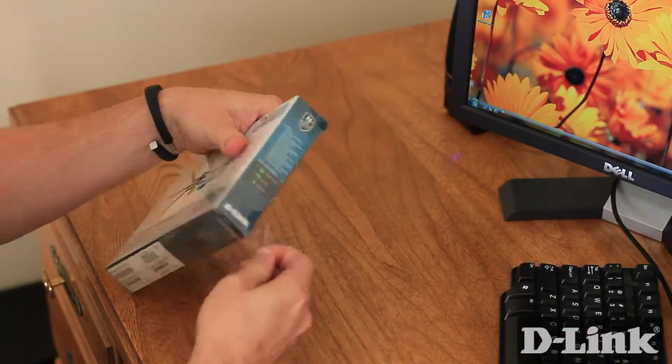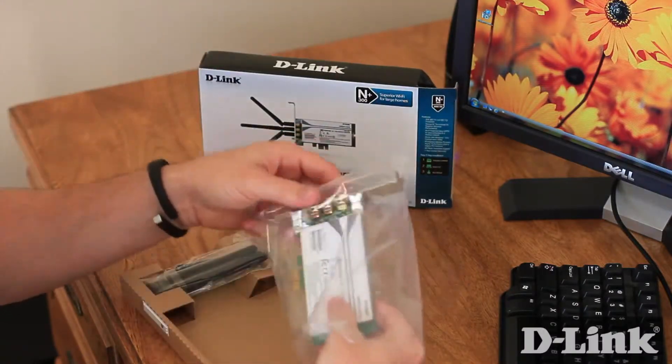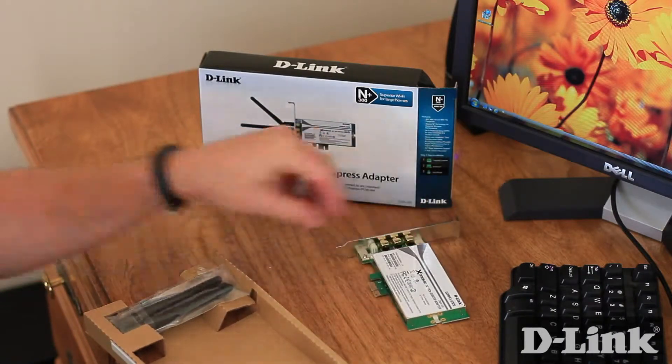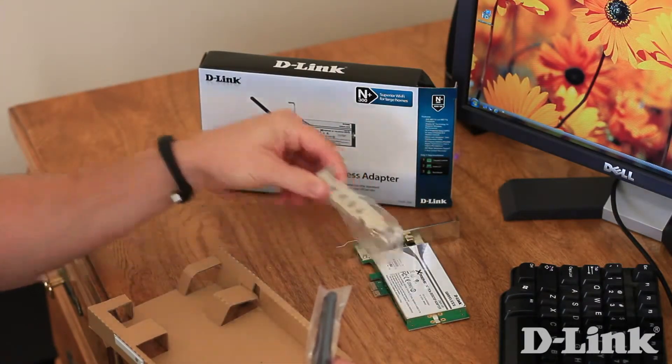First, let's take a look at what you get in the box. Open up the package, and inside you have the wireless PCI Express card. You also have a low profile bracket for small form factor PCs, like many home theater PCs, in addition to three antennas.